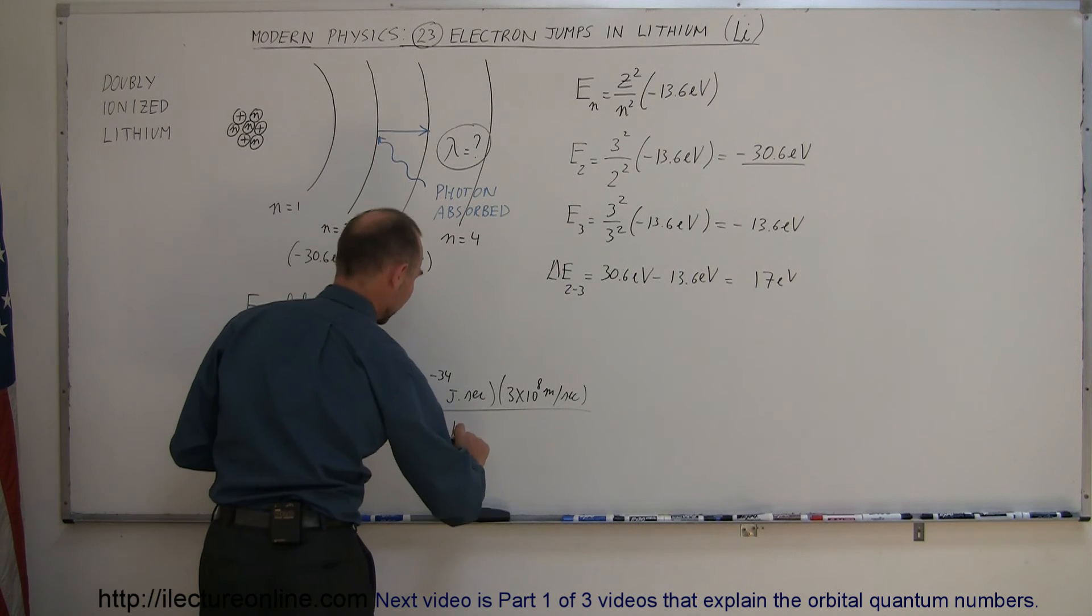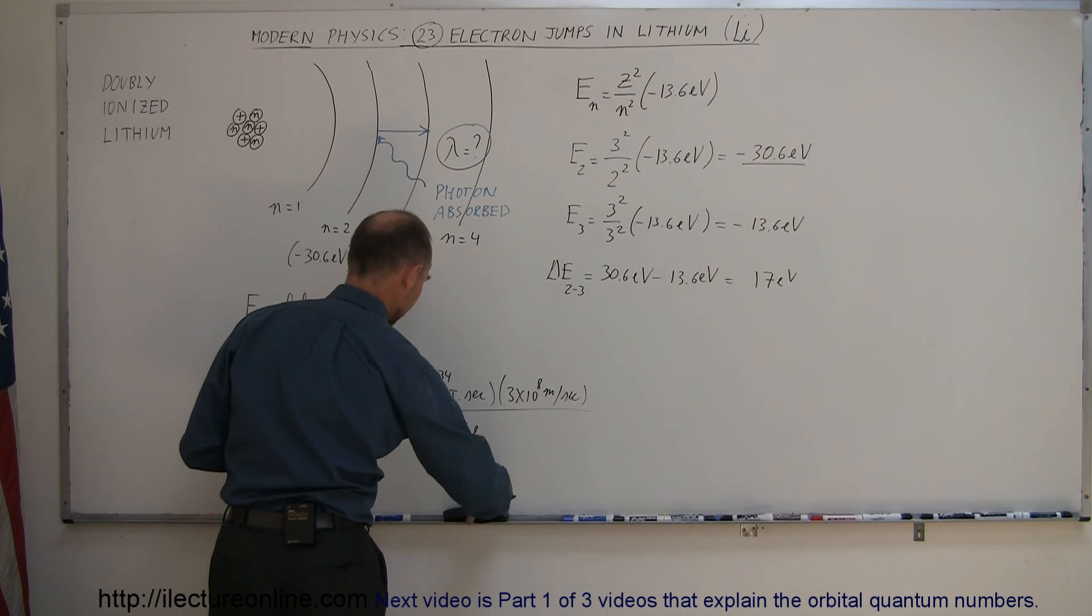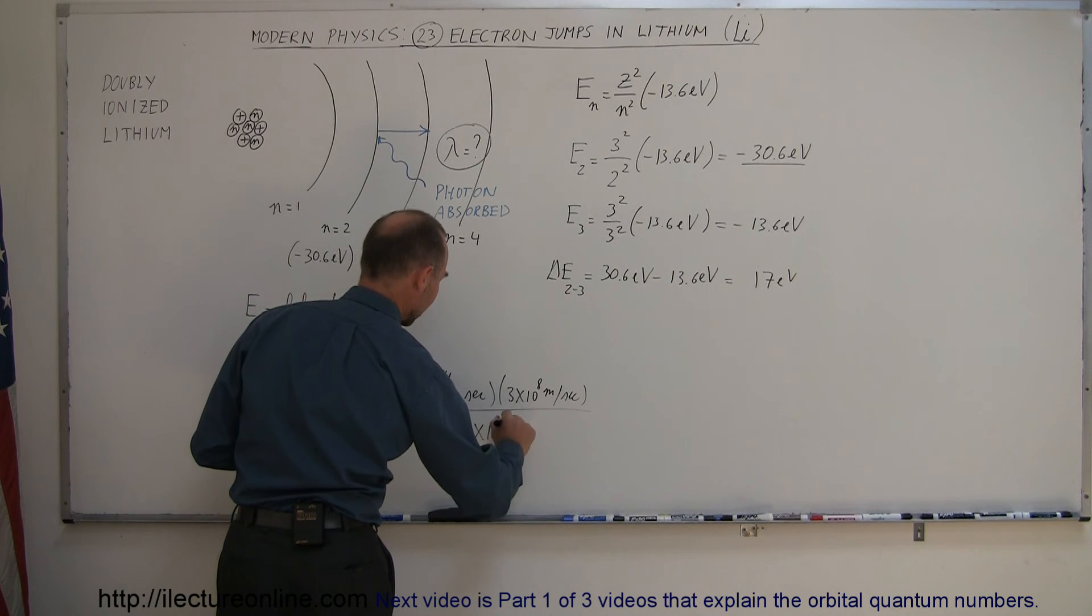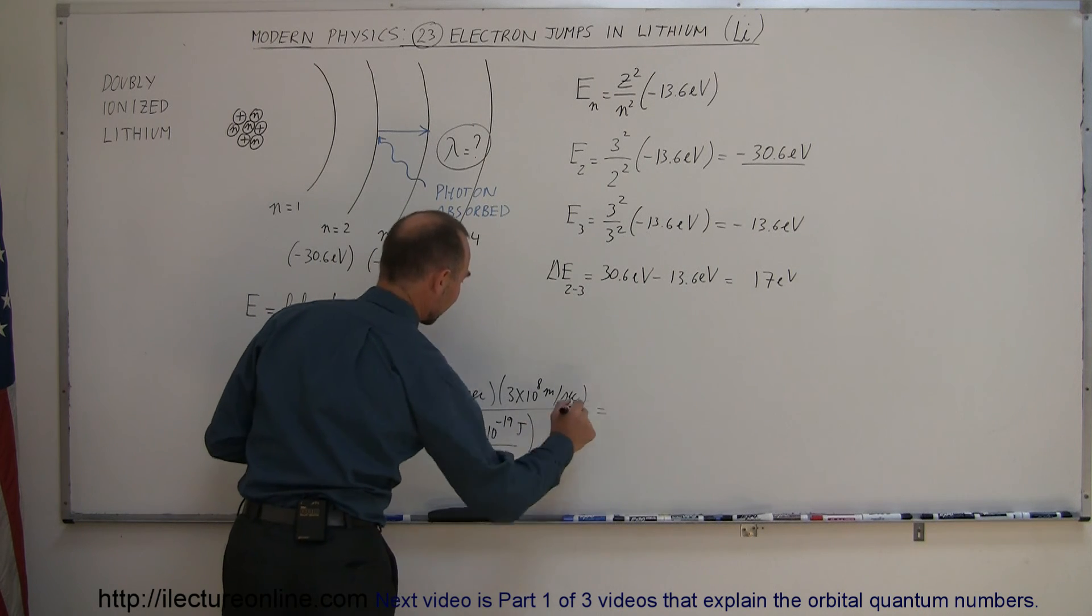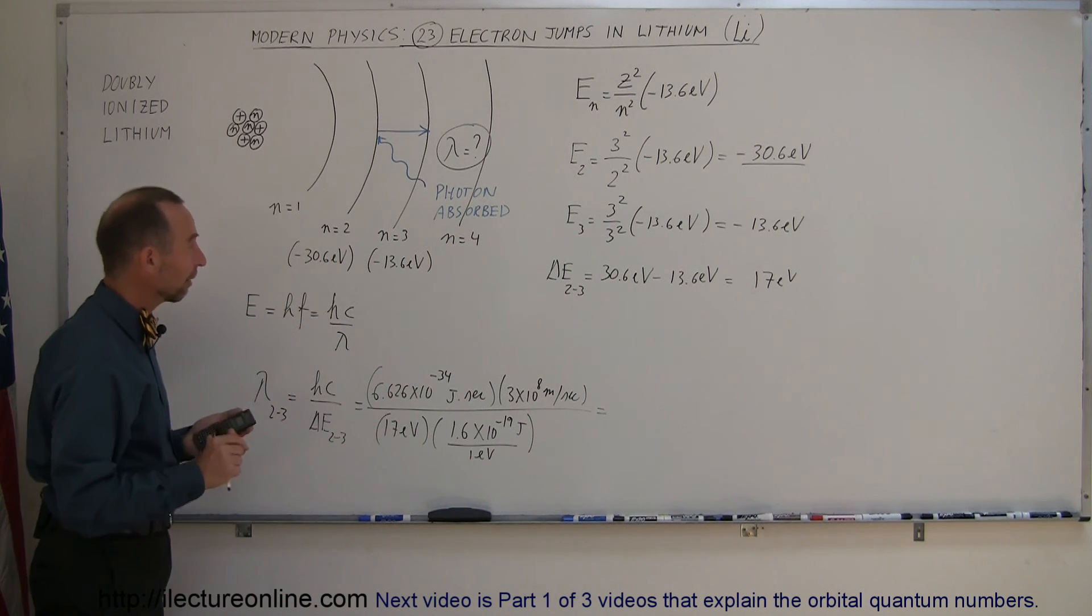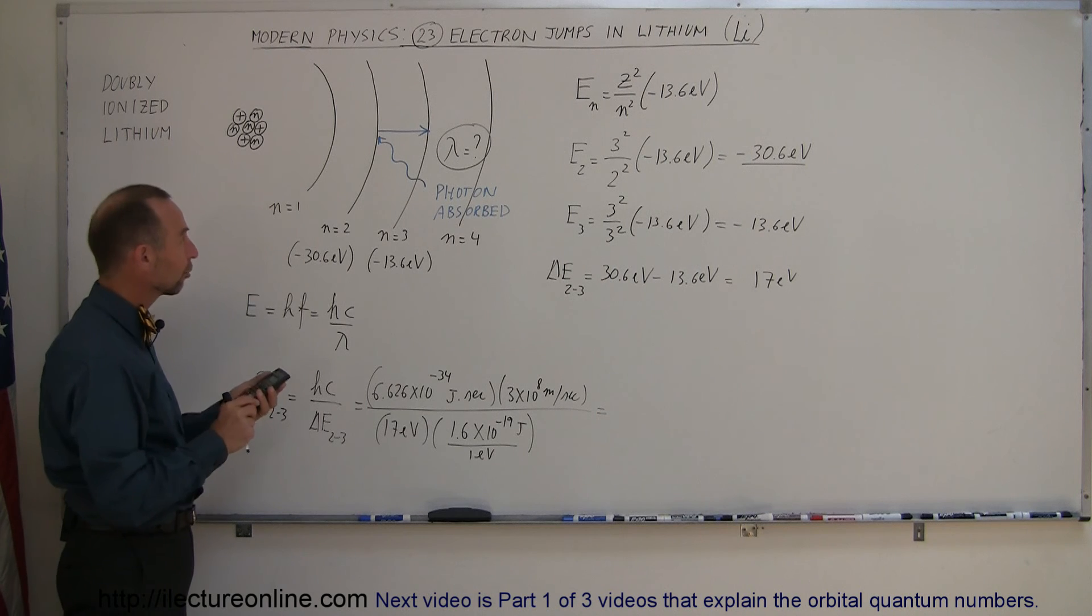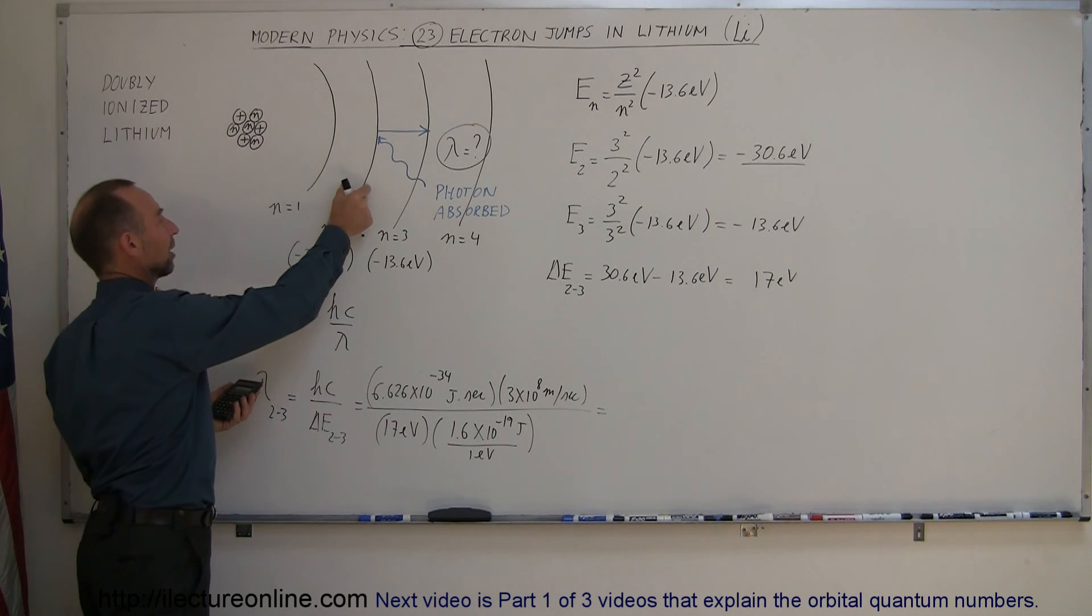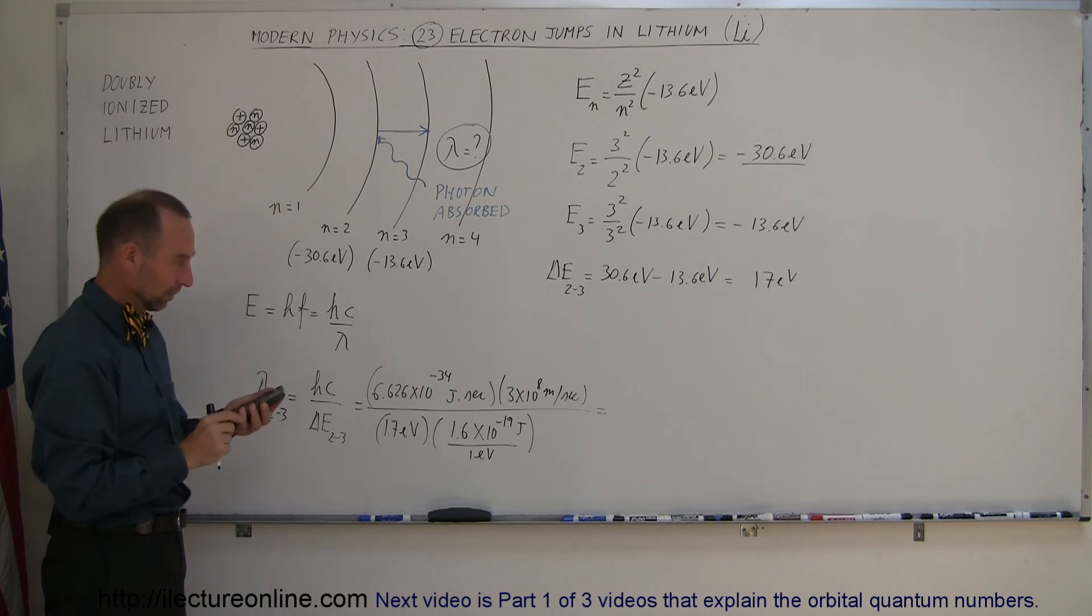Divide the whole thing by the difference in the energy, which was 17 electron volts. Then, of course, we have to multiply it times the conversion, 1.6 times 10 to the minus 19 joules per one electron volt. Let's find out what the wavelength is of that photon that will have to be absorbed.